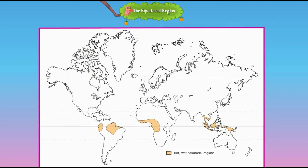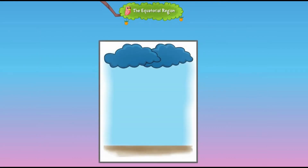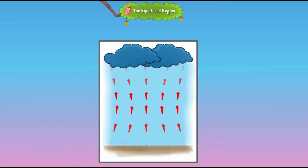The equator also passes through the Congo basin in Africa and the Indonesian islands of Asia. These are the areas that experience equatorial climate. The equatorial region receives the direct rays of the sun, making the land very hot.